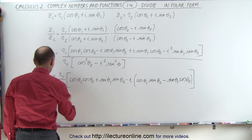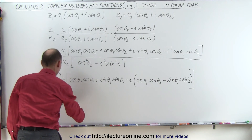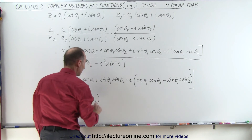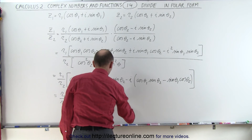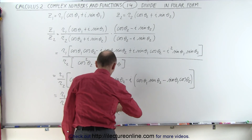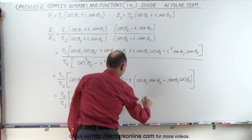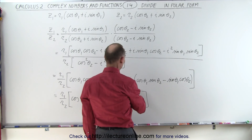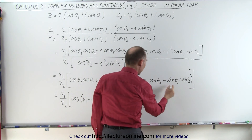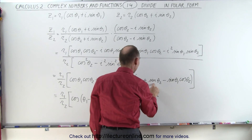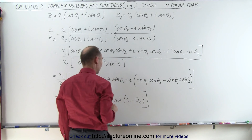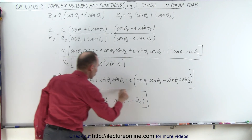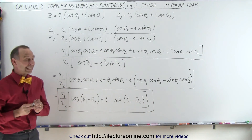So now we can finish. This is equal to R1 divided by R2 times the cosine of theta 1 minus theta 2, plus i times the sine of theta 1 minus theta 2. Checking the signs: multiplying the negatives through switches things around so we get a positive result, and this is the quotient of two complex numbers in polar form.